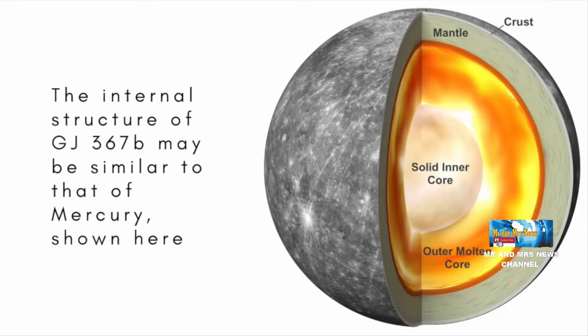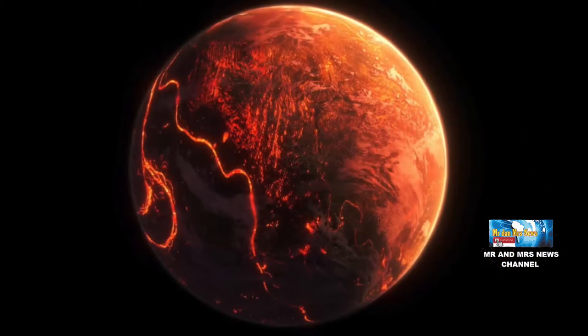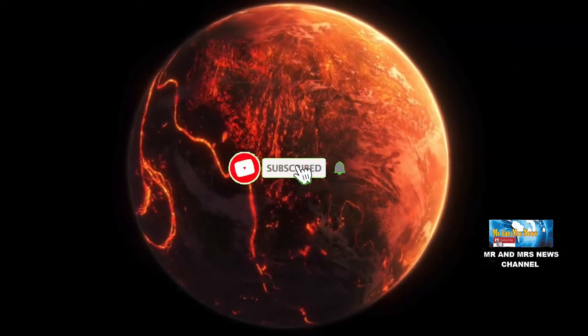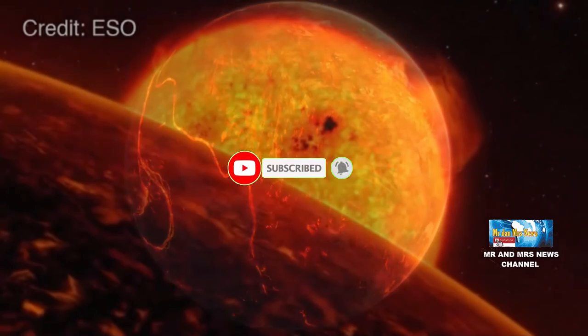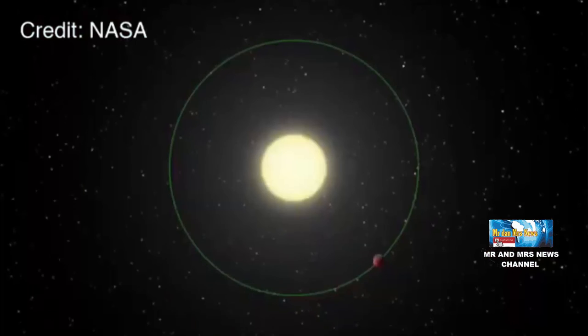Pada siang hari, planet tersebut memiliki suhu 1500 derajat celcius yang cukup panas untuk melelehkan batu dan logam. Planet ini juga dibombardir dengan radiasi 500 kali lebih banyak daripada yang diterima bumi dari matahari.